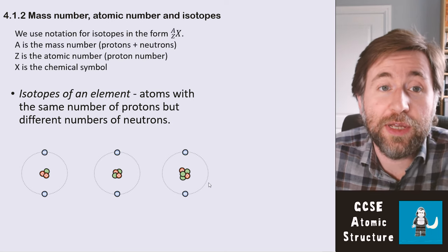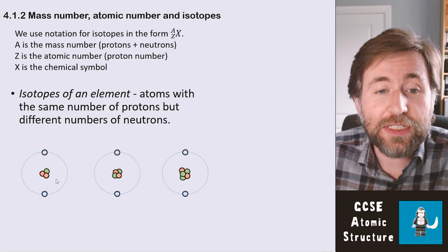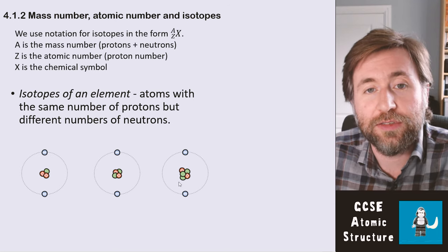These are three isotopes of helium. They're all helium because they have two protons, but this helium has only one neutron, this has two, and this has three.